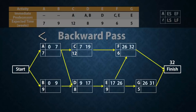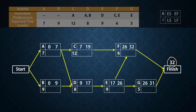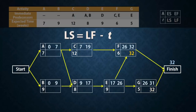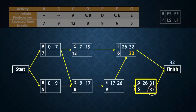Now let's do the backward pass. Since the project completion time is 32 weeks, the latest finish times for the activities at the finish node, F and G, has to be 32. That is, F and G cannot be completed in longer than 32 weeks. Next we obtain the latest start times by subtracting the activity times from the latest finish times. For G, the latest start time will be 32 minus 5, to give 27. For F, the latest start time will be 32 minus 6, and that gives 26.